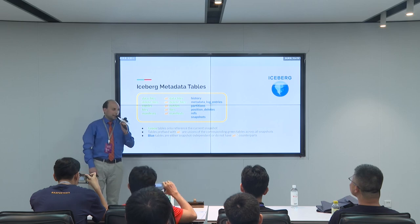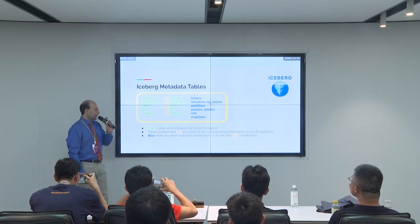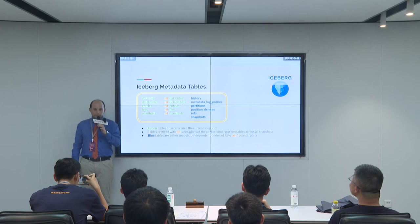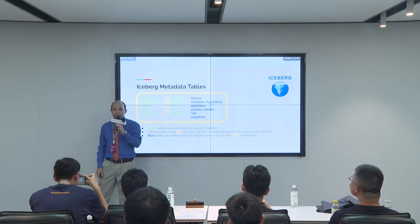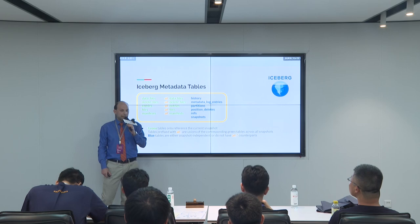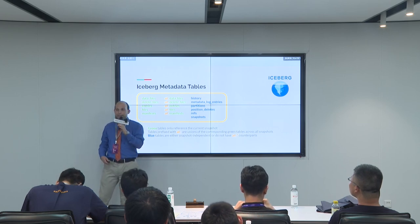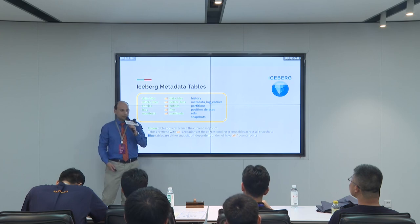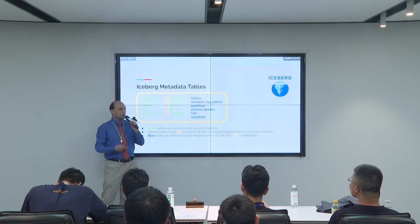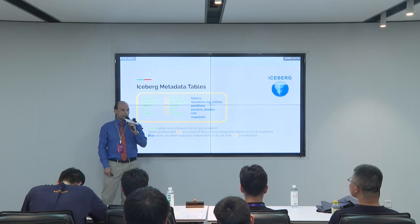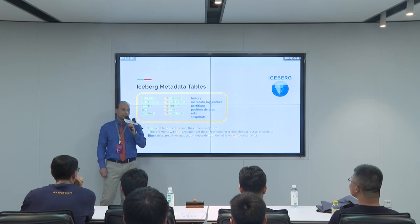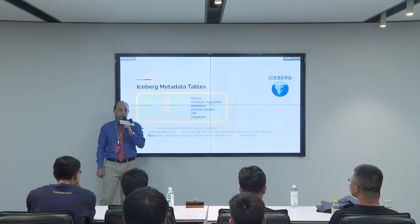This is the list of metadata tables that Iceberg provides us. On the left, you can see tables which contain information about the latest snapshot. In the middle, you've got corresponding tables prefixed with 'all', which contain the same data but across all of the snapshots — as if it were a union of all this data across all snapshots. And on the right, you can see other tables which are mostly snapshot-independent, or simply don't have a corresponding 'all' table.